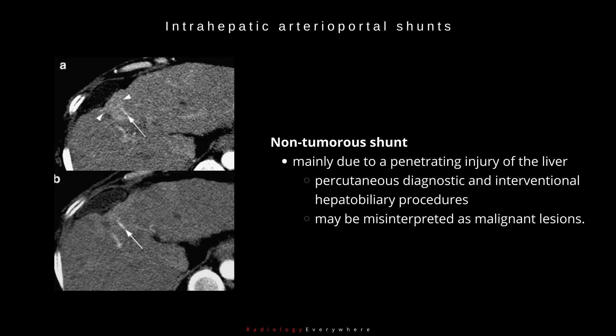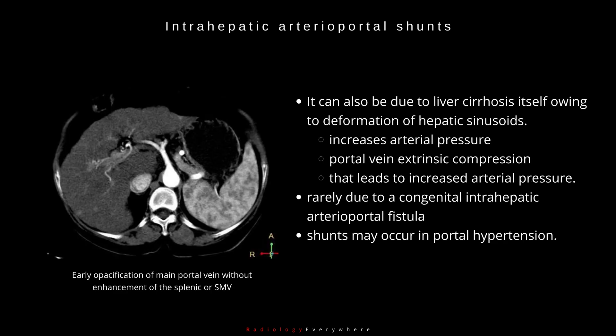Non-tumorous shunt: this is mainly due to a penetrating injury of the liver, including percutaneous diagnostic and interventional hepatobiliary procedures, and may be misinterpreted as malignant lesions. It can also be due to liver cirrhosis itself owing to deformation of hepatic sinusoids, or increased arterial pressure from portal vein extrinsic compression. It can be rarely due to a congenital intrahepatic arterioportal fistula.